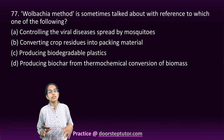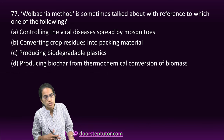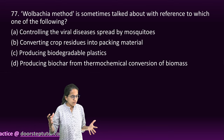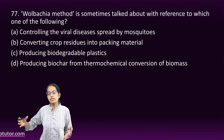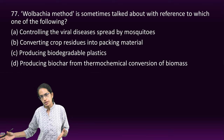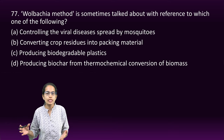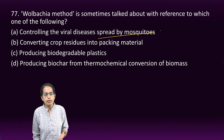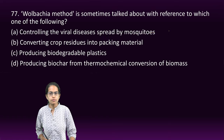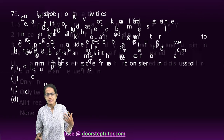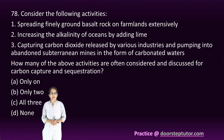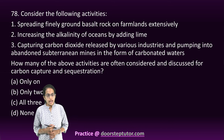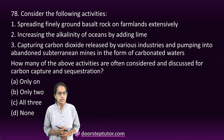The next question is on the Wolbachia method, which is a method through which the population of male mosquitoes is increased. The idea is that with a higher number of male mosquitoes, it compensates the number of female mosquitoes, ultimately controlling the spread of mosquito diseases. So option A is the right answer, and this is a biological method to control mosquito growth.